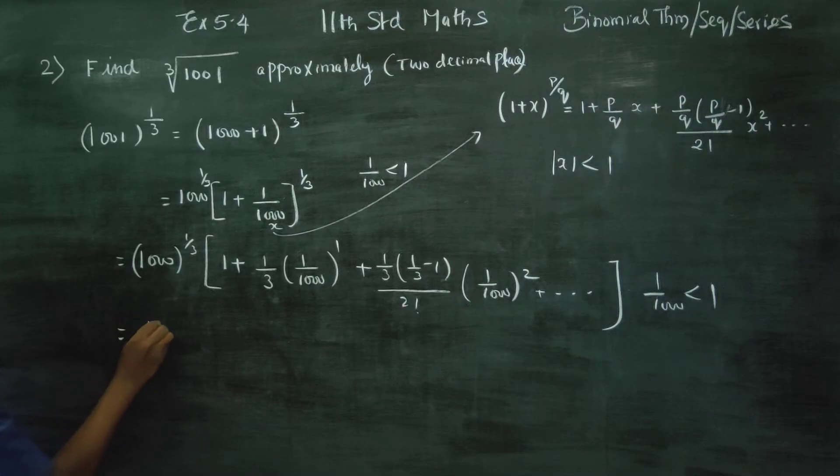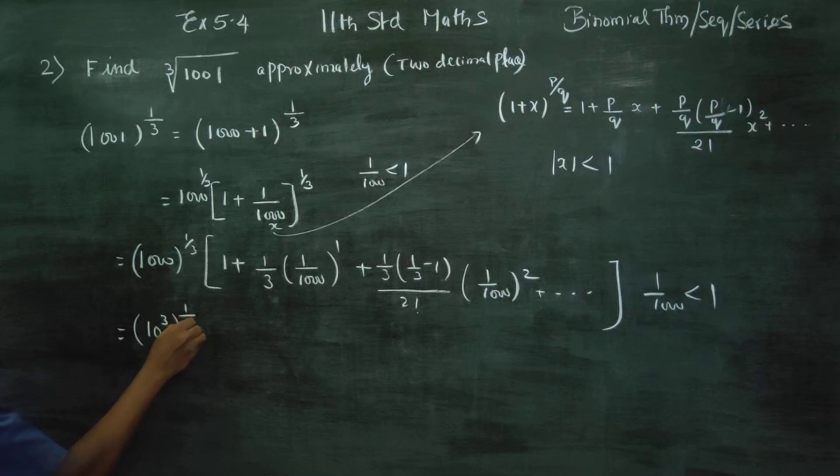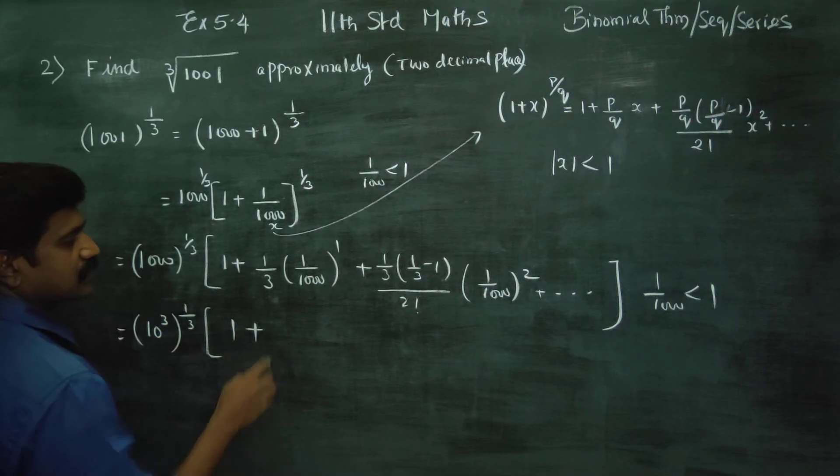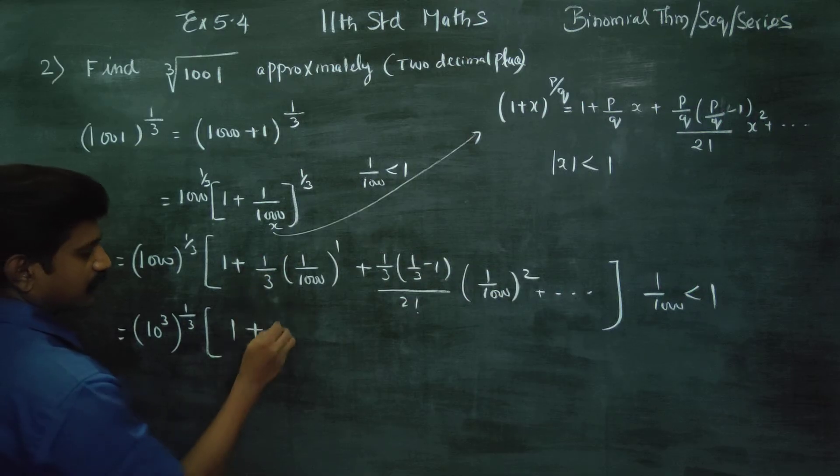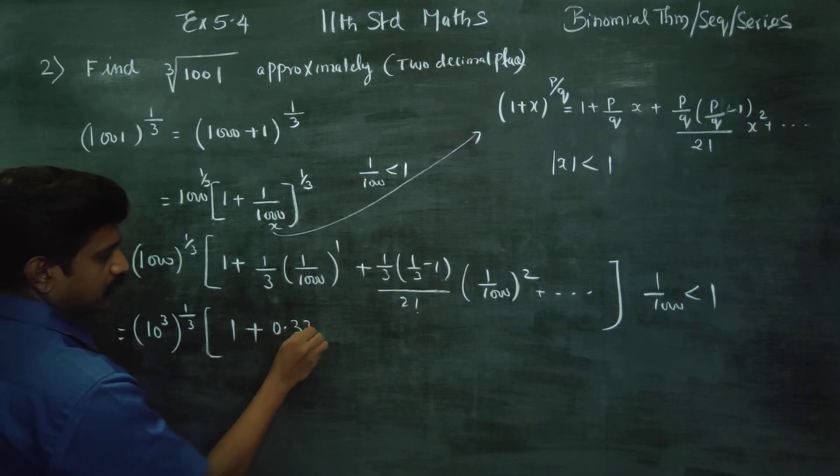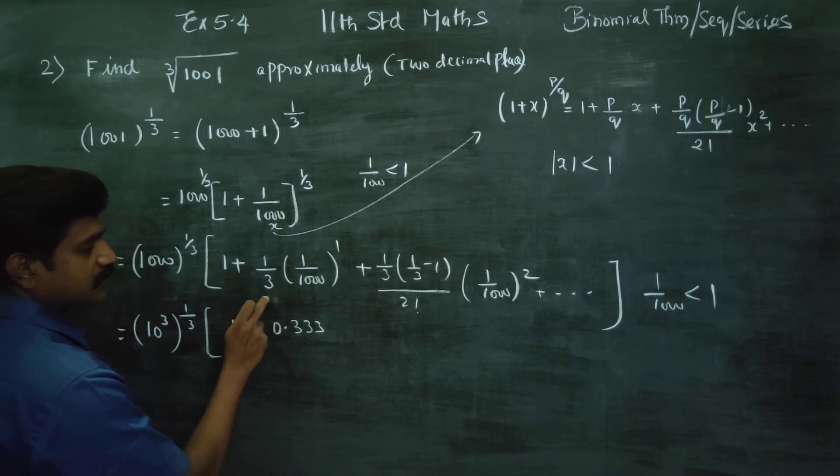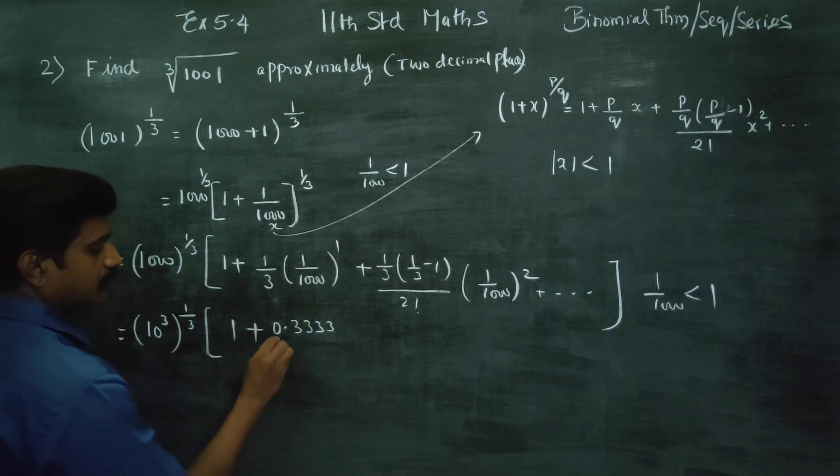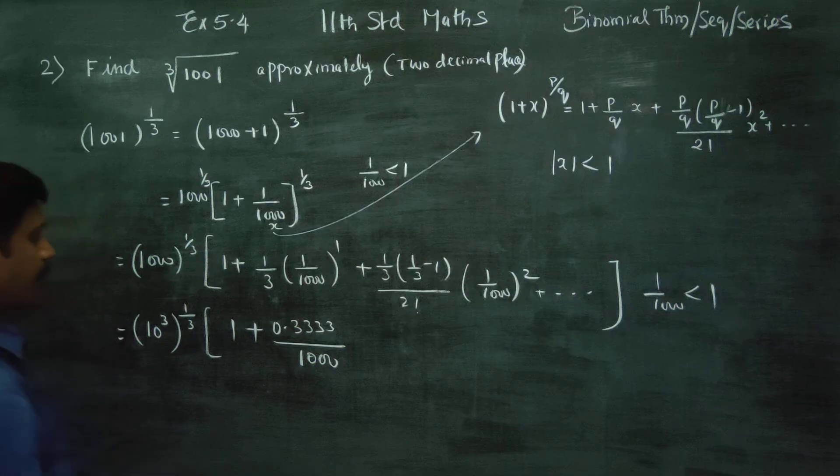This can be written as 10 power 3, 10 into 10 into 10 power 3, whole power 1 by 3. 1 plus 1 by 3. 1 by 3 is 0.333 and it goes on. 0.333 into 1 by 1000.